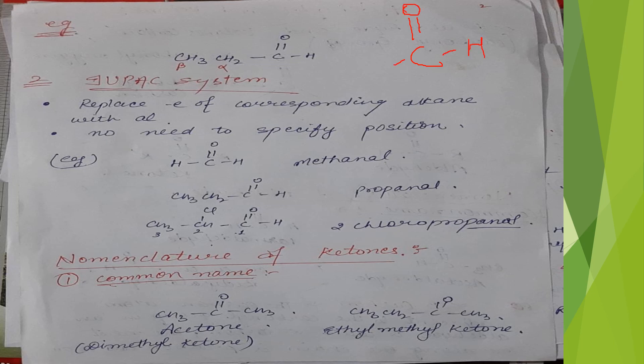The carbon adjacent to the carbonyl carbon is called alpha carbon, and the next one is beta carbon. This is the alpha-beta carbon designation.